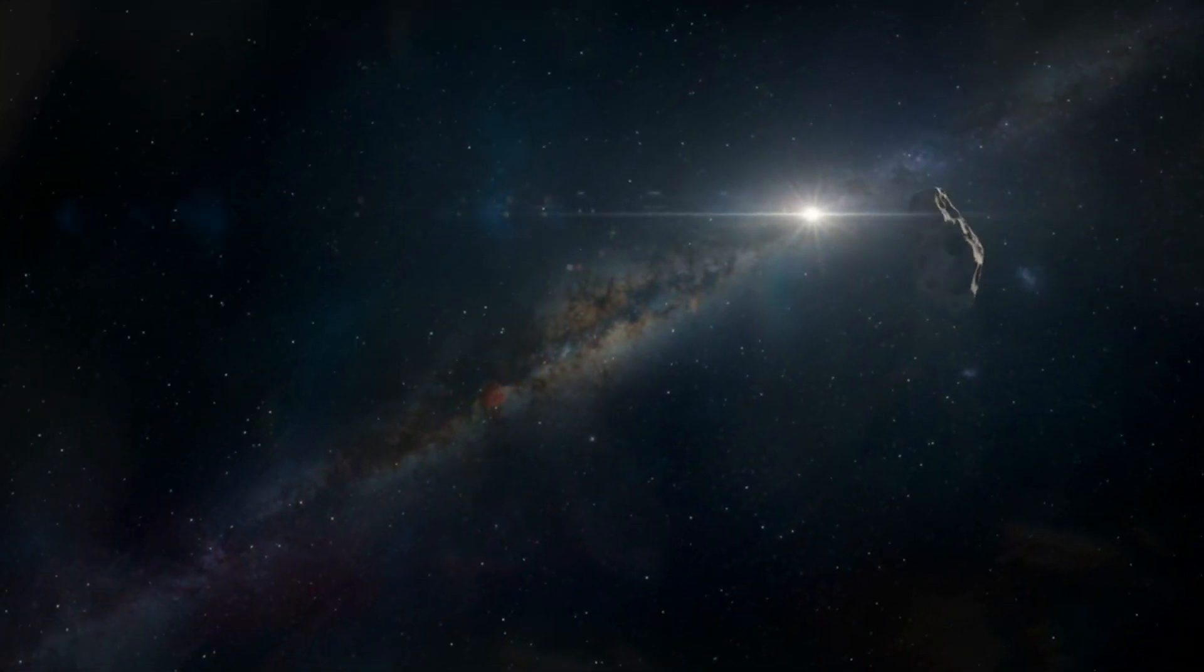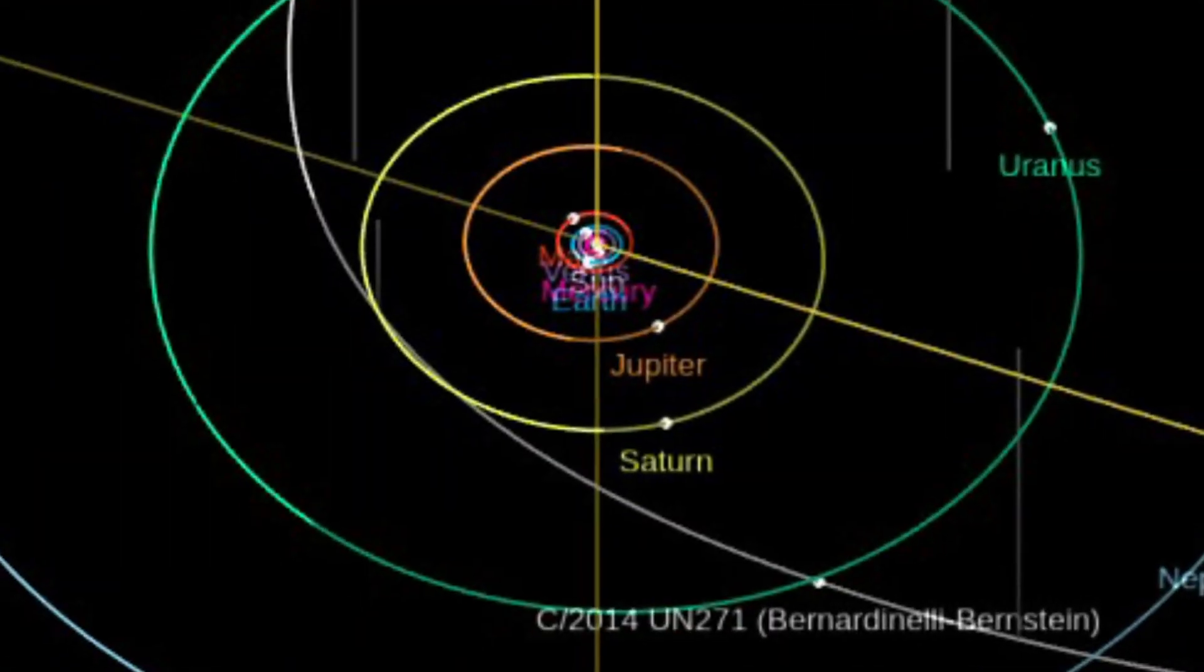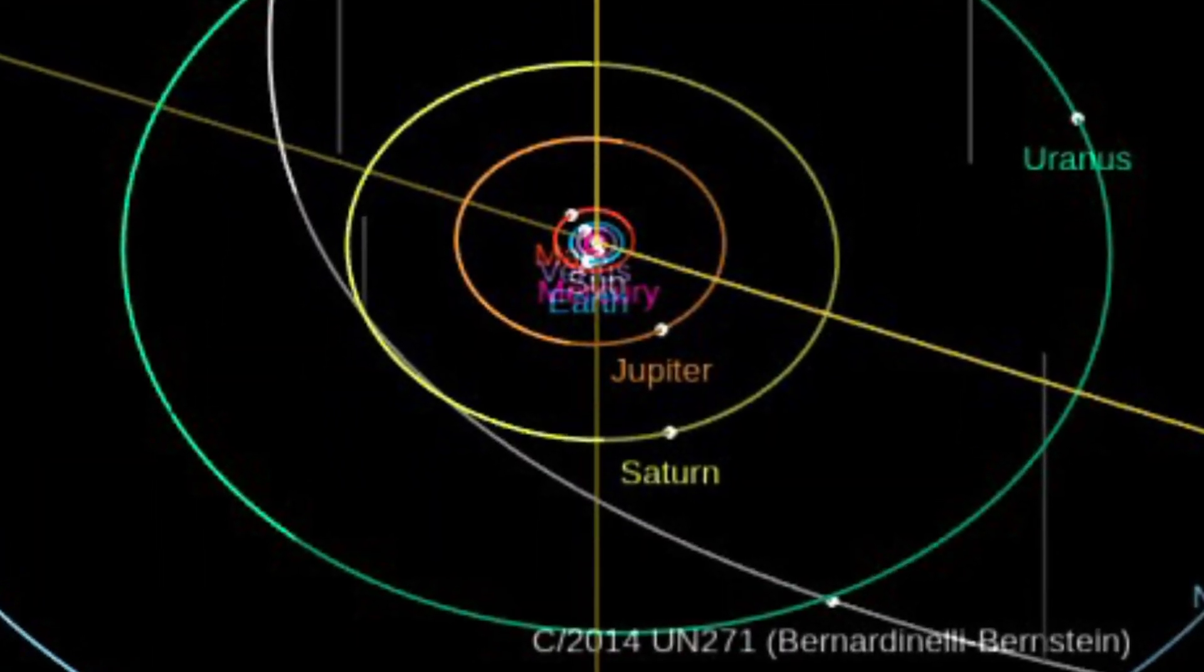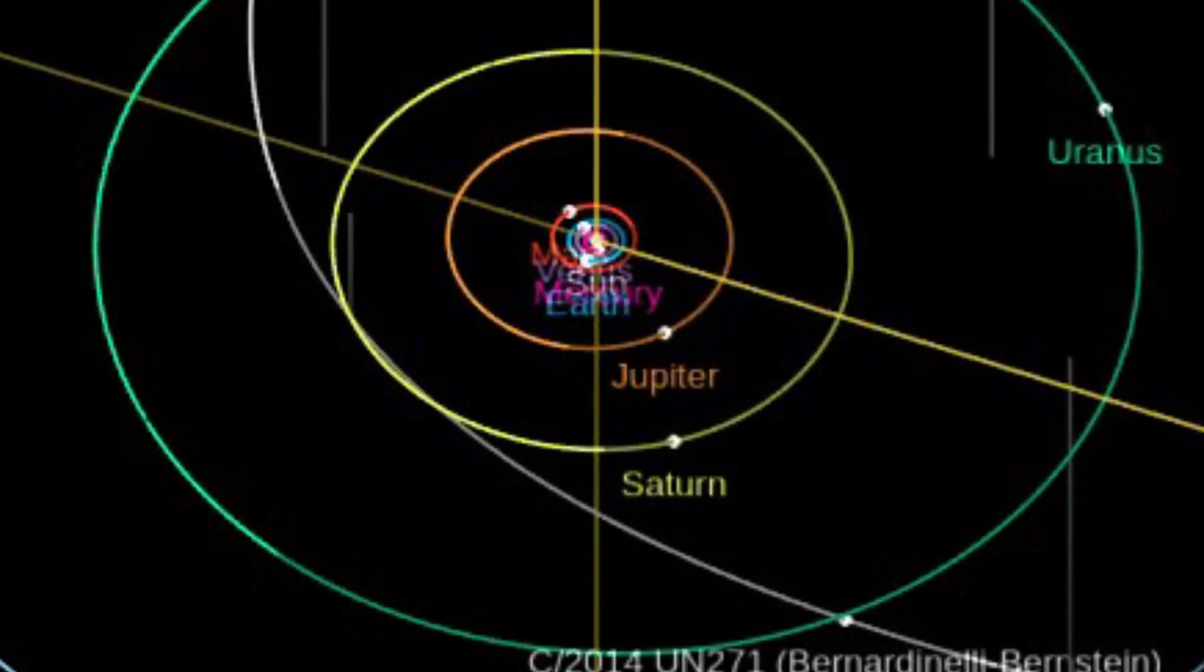But have no fear, it'll never go closer to the sun than 1 billion miles, which is somewhat further than the distance between Saturn and the sun, and it will not occur until 2031.